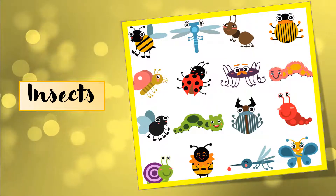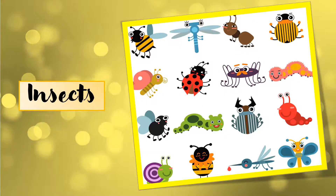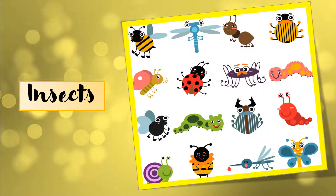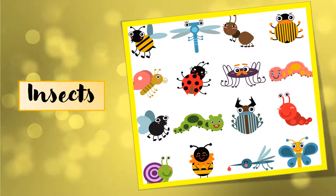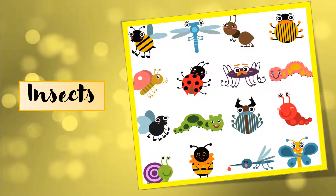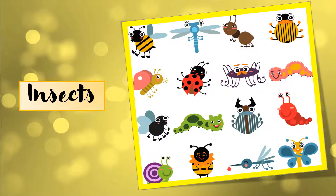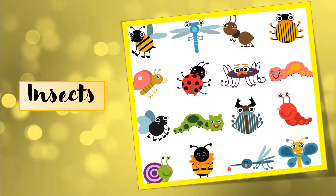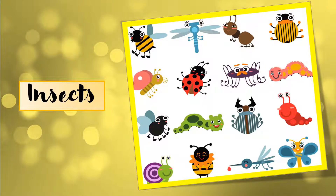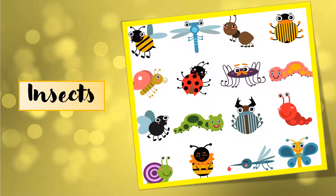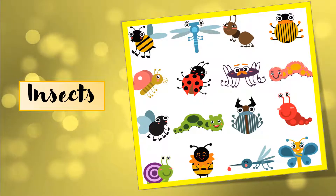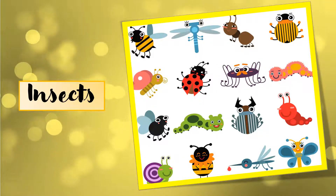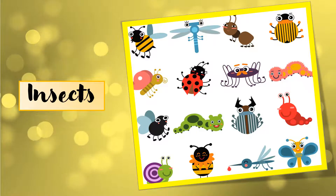And the second difference is, all the insects have six legs. Insects ki six legs hoti hain. Whereas the birds have only two legs. Toh birds ki sirf two legs hoti hain. So always remember that and do not get confused between birds and insects.